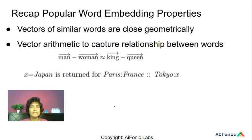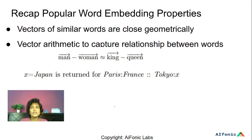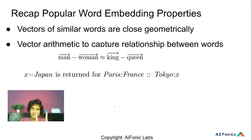Let's recap what word embeddings are. Word embeddings are a way to represent a word as a vector which can be fed to downstream applications like a machine learning model, like a classifier, or used for semantic similarity and many other applications. A popular set of pre-trained embeddings are the Google News embeddings trained with word2vec, and another popular set are the GloVe embeddings. A property of these embeddings is that vectors of similar words are close geometrically, and vector arithmetic can capture relationships between words — for example, man minus woman is geometrically close to king minus queen.